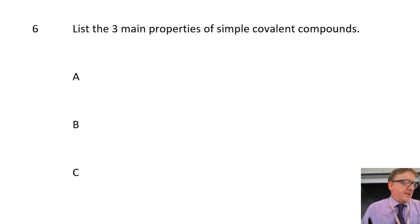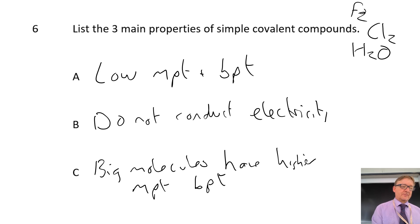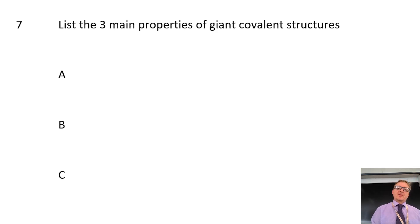Question number six, list the three main properties of simple covalent. So simple covalent are very small things like chlorine or water. Covalent is when you've got two non-metals, or even more. So what you've got is you've got low melting and boiling point. Because that often means that they're a gas or a liquid. They do not conduct electricity. So think about chlorine, think about fluorine, think about oxygen, they don't conduct electricity. Large compounds, so big molecules, have higher melting and boiling points.